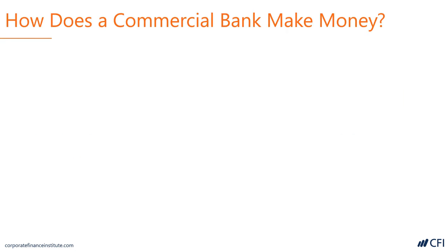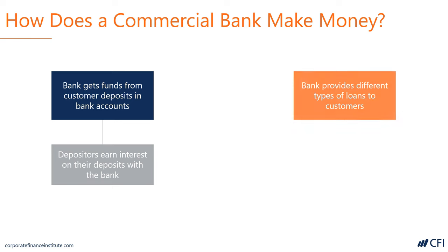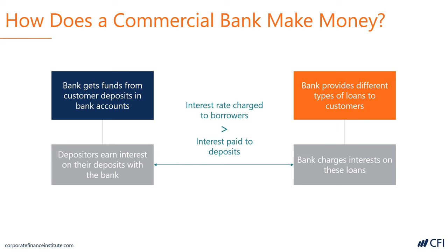Let's take a look at how a bank makes money. It gets funds from its customers and pays them a portion of interest on those funds. It then lends out funds to other customers and charges them a rate of interest. The spread between the amount that it pays the deposit customers and the amount that it charges the borrowing customers is the spread and the money that it makes, which is called interest income.